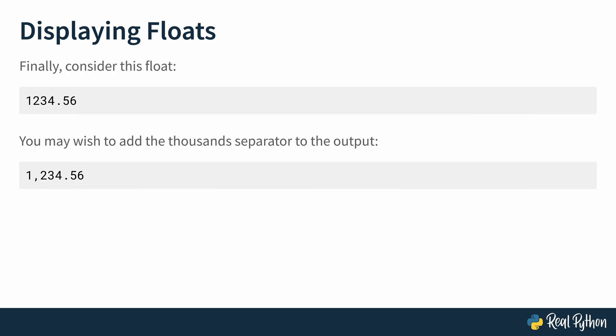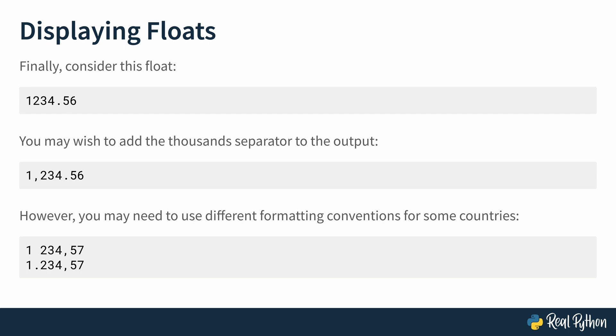Here's a final example showing some things you can do when formatting floats. Take the number 1234.56 — you may want to show the thousand separator by putting a comma between the 1 and the 2, giving 1,234.56. However, different countries have different conventions. In some places, the dot representing the decimal point is replaced with a comma, and in other parts of the world, the thousand separator is itself a dot — so the dot and comma are reversed. These are all customizations you can do directly using f-strings.